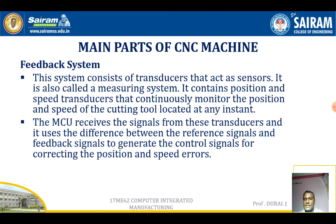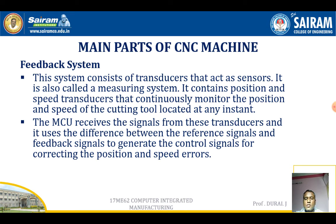The feedback system consists of transducers that act as sensors and is also called the measuring system. It contains position and speed transducers that continuously monitor the position and speed of the cutting tool at any instance. Transducers convert one form of energy into another. Whenever any changes occur, the feedback signal is sent to the machine control unit. The MCU receives signals from the transducer and uses the difference between the commanded signal and feedback signal to generate a control signal, correcting position and speed errors.